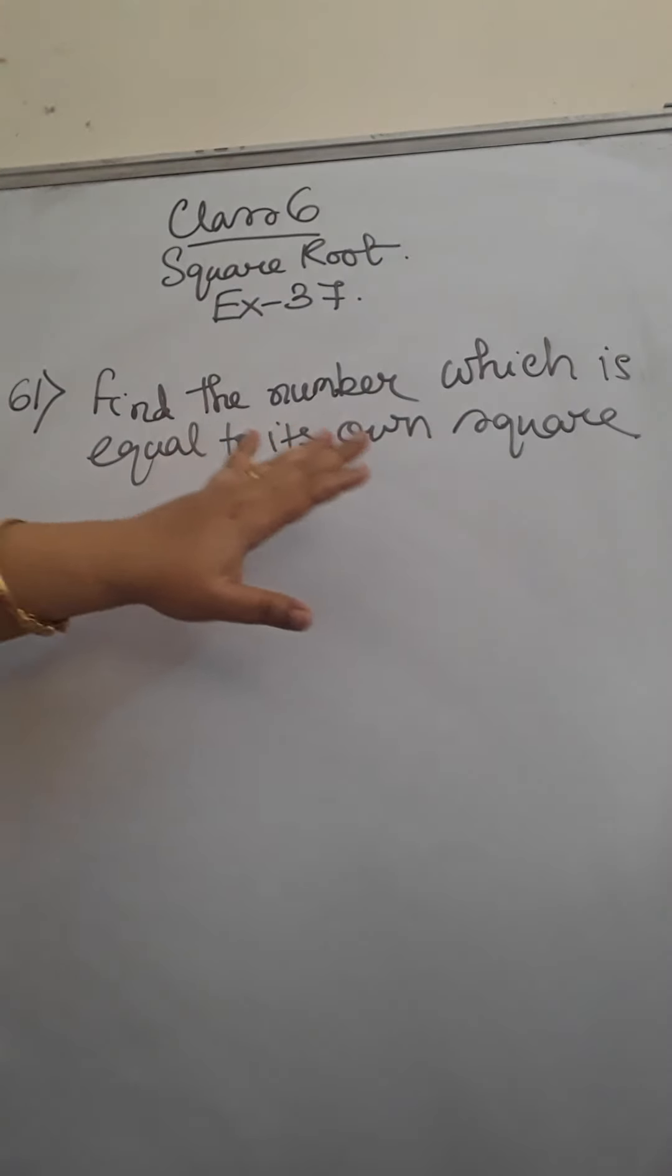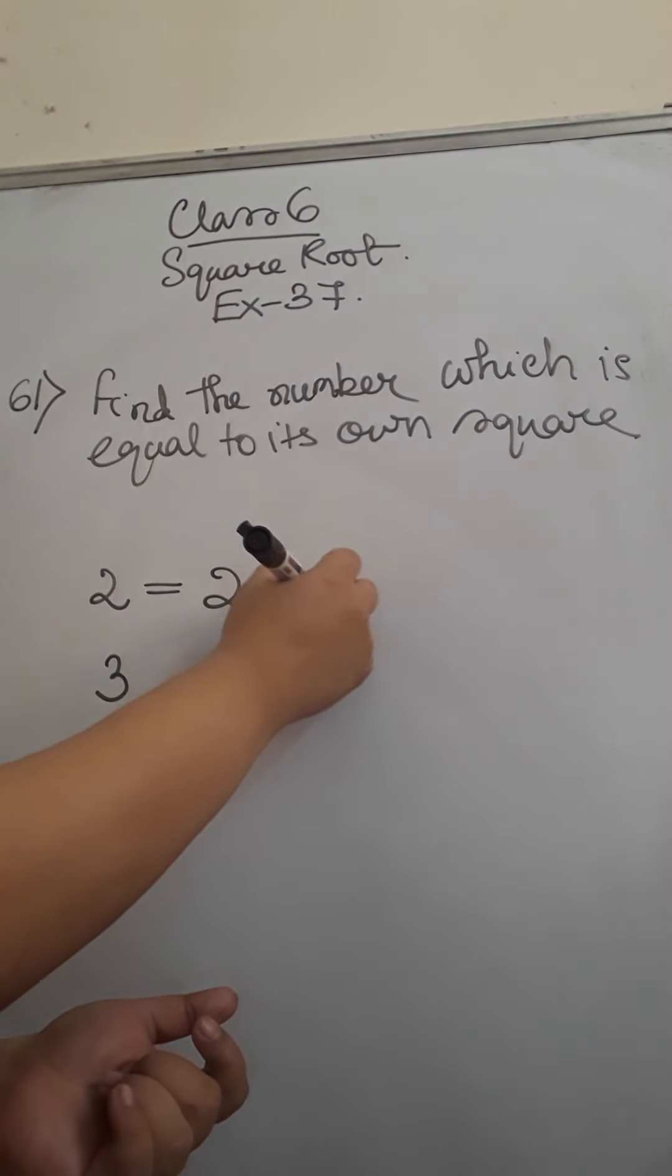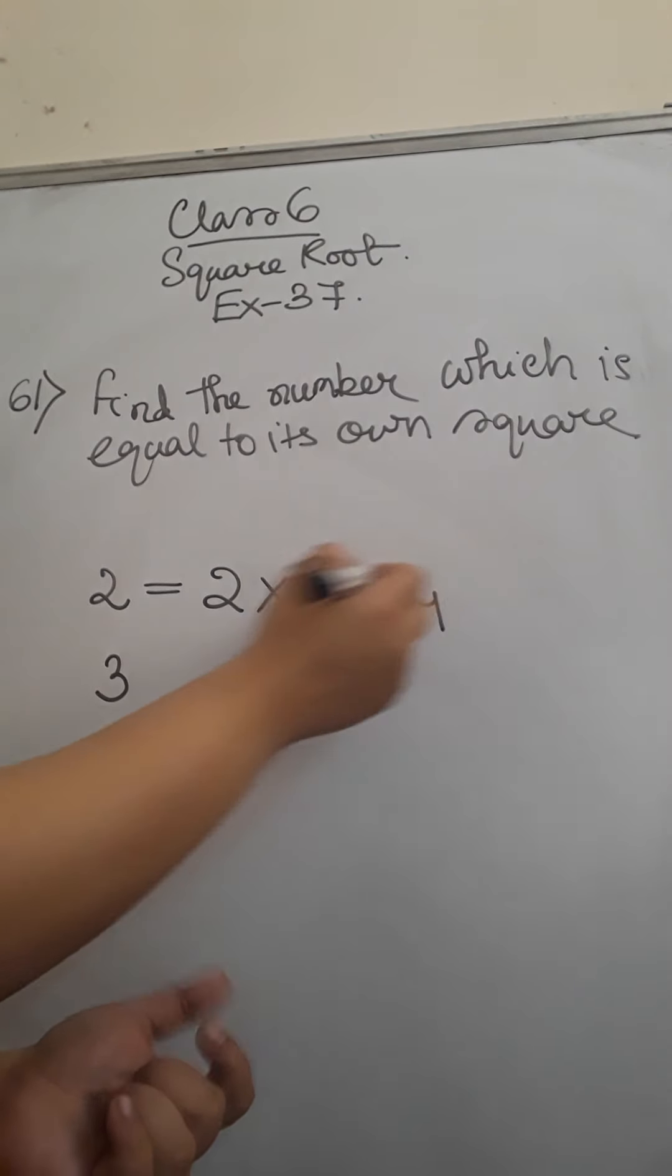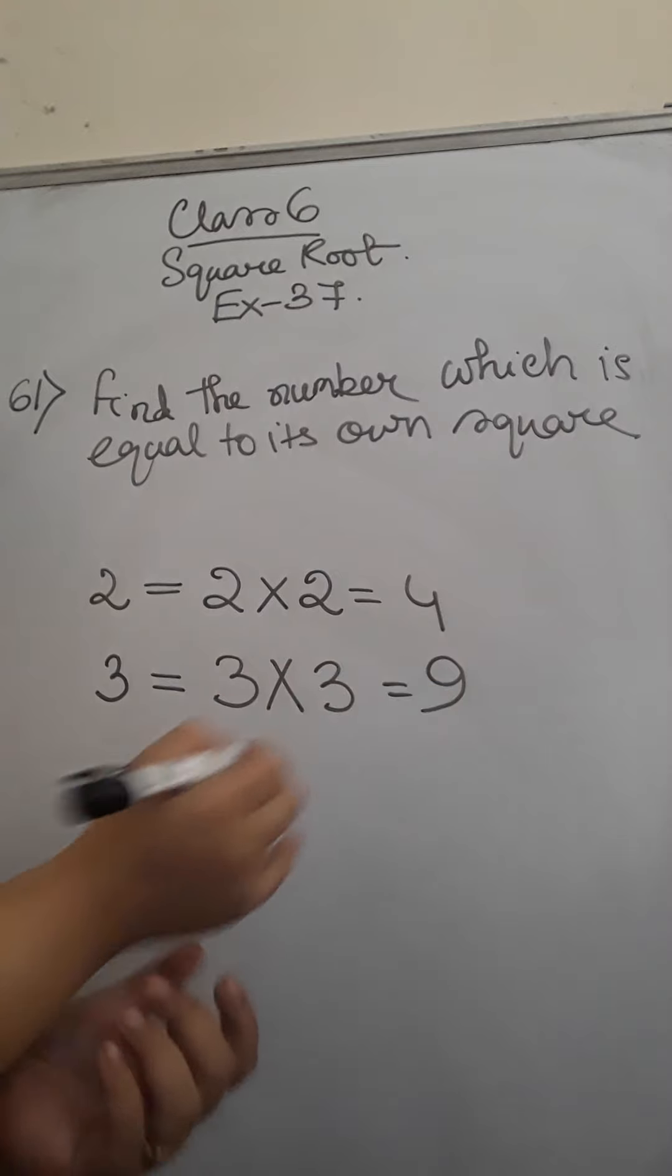Find the number which is equal to its own square. Now if you take any number, suppose 2, 3. If you find the square, square means multiplying it 2 times, the number becomes different. Similarly, in case of 3 also, if you square the number, it produces a different result.